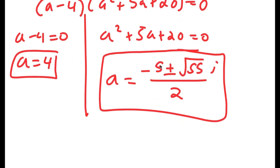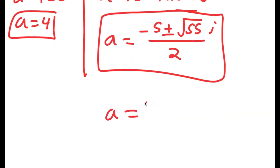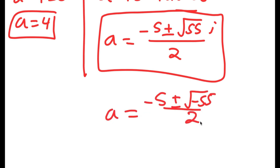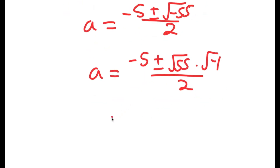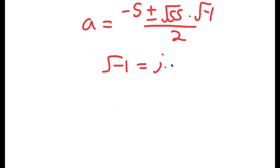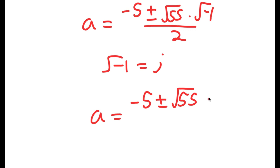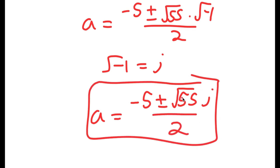What you should get is a equals negative 5 plus or minus the square root of negative 55 over 2. The square root of negative 55 can be rewritten as the square root of 55 times the square root of negative 1, and the square root of negative 1 is the imaginary number i. So a is equal to negative 5 plus or minus the square root of 55 times i, all over 2.